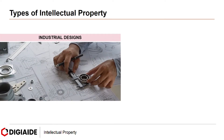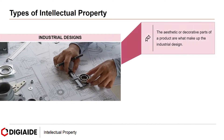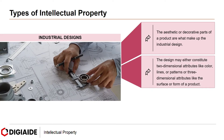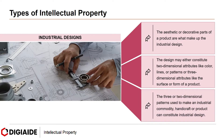Industrial Designs. Aesthetic or decorative parts of a product are what make up the industrial design. The design may either constitute two-dimensional attributes like color, lines or patterns, or three-dimensional attributes like the surface or form of a product. The two or three-dimensional patterns used to make an industrial commodity, handicraft or product can constitute industrial design. It enhances the goods' values commercially and makes them look attractive.